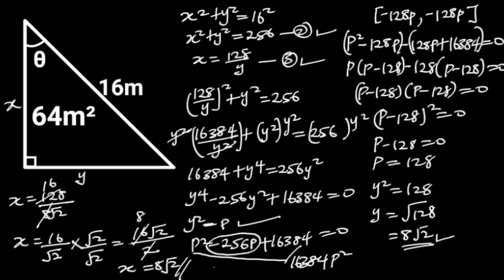Now, let's observe that x is equal to 8 root 2, and y is also equal to 8 root 2. Since x is equal to y, it follows that the triangle is an isosceles triangle. Therefore, theta is equal to 45 degrees.